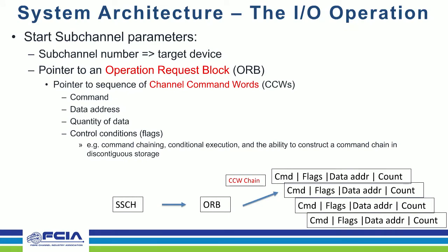A refresher on how IO is performed: a start subchannel processor instruction is executed, and that instruction identifies the target device — known as a subchannel in mainframe lingo — and it points to a parameter called the operation request block. This ORB points to a single command or a series of commands to be executed, along with the address of where data resides or should be placed in host memory, a count of data relevant to that address, and control flags that guide execution. Once the start subchannel instruction is issued, the processor is free to do other work, and the IO subsystem takes over.